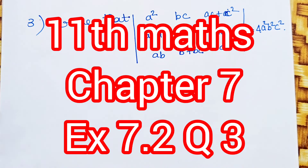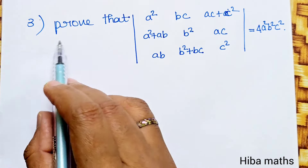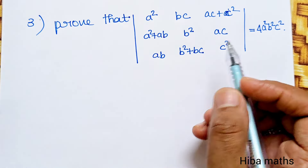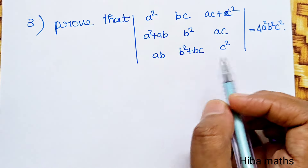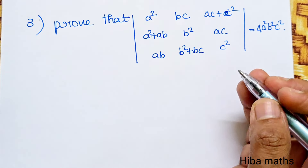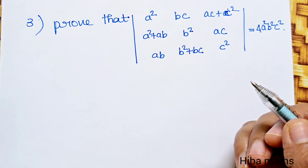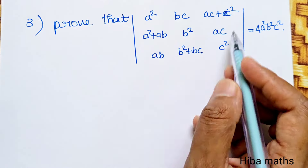Hello students, welcome to Hiva Max, 7th channel, Chapter 7, Exercise 7.2, 3rd question. We will solve this — it is a proof that A² BC·AC + C²·A²·AB + B²·AC·AB + B²·BC·C² is equal to 4A²B²C².